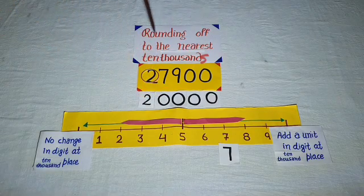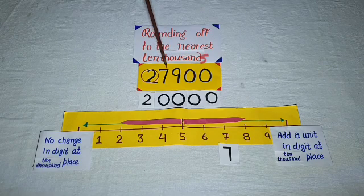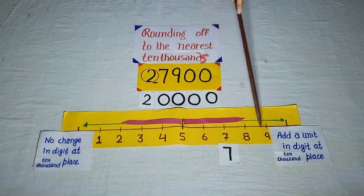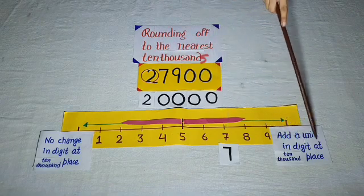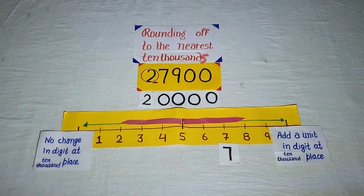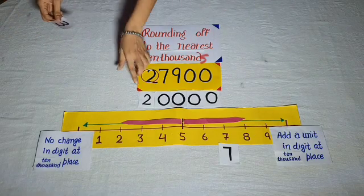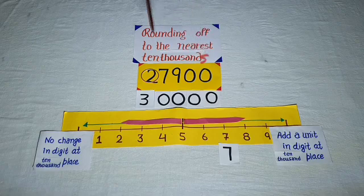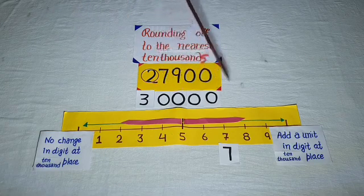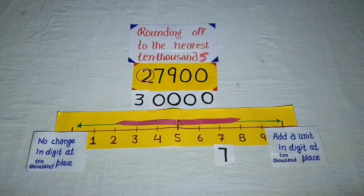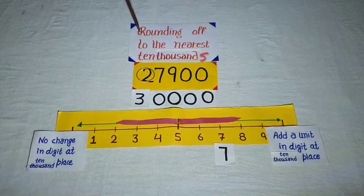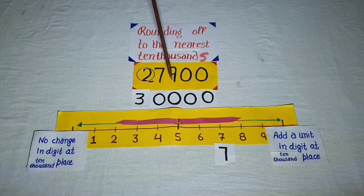We round off to the nearest ten thousand. Look at the thousandths place — the digit is 7. So add a unit to the digit at the ten-thousandths place, making it three. So the number 27,900 can be rounded to thirty thousand. There is a simple way of rounding off: if you want to round to the nearest ten thousand, put four zeros to the right.